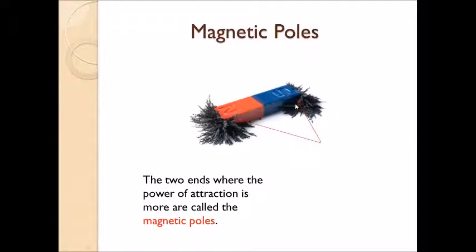You will observe there are more fire clips or iron filings near the two ends of the magnet. The attractive power of the magnet is more at the ends than the middle. The two ends where the power of attraction is more are called magnetic poles. These are magnetic poles.